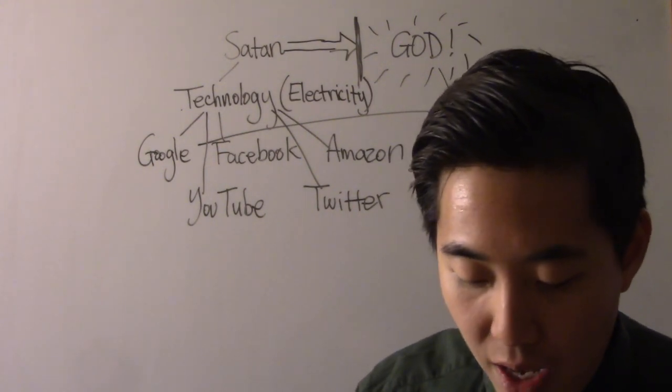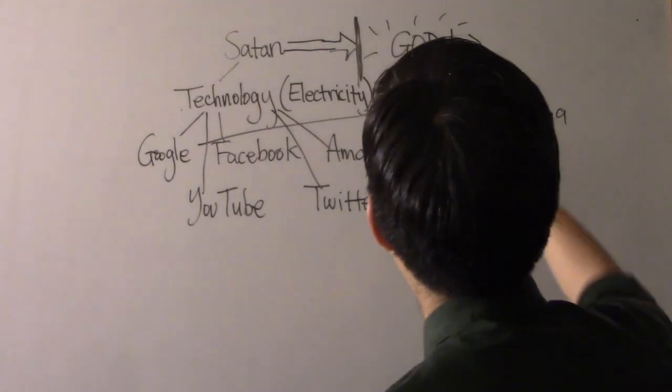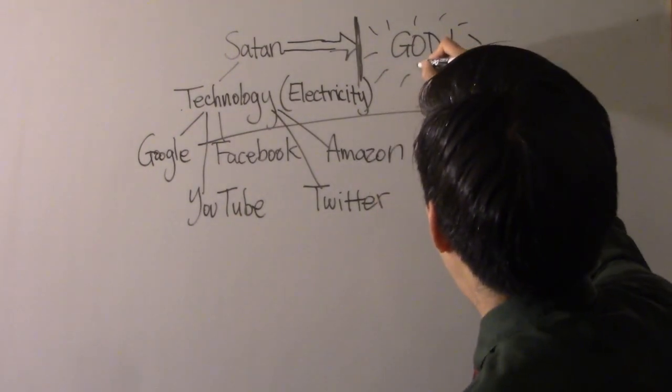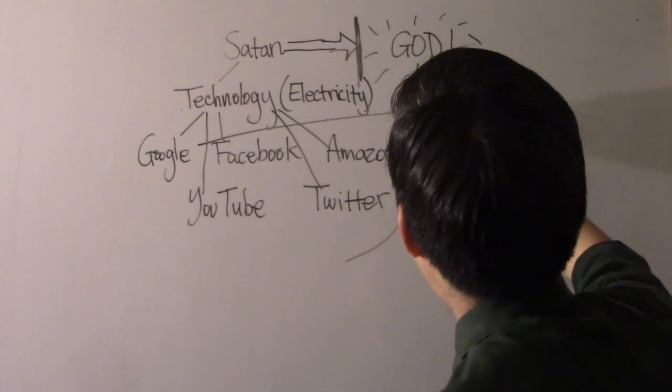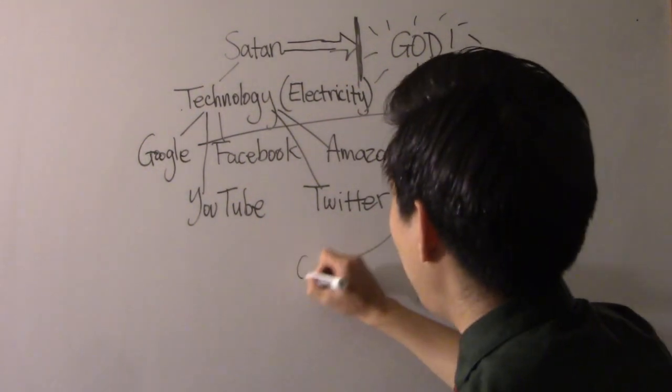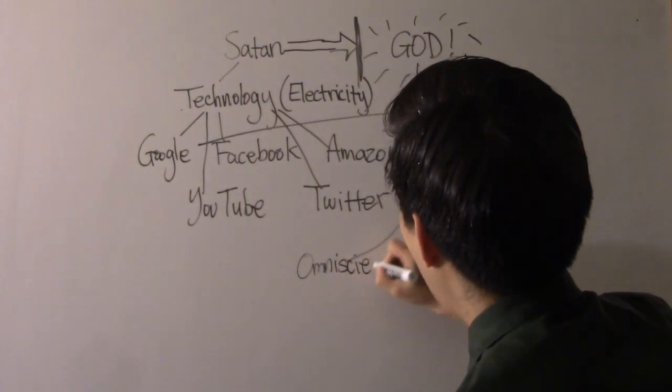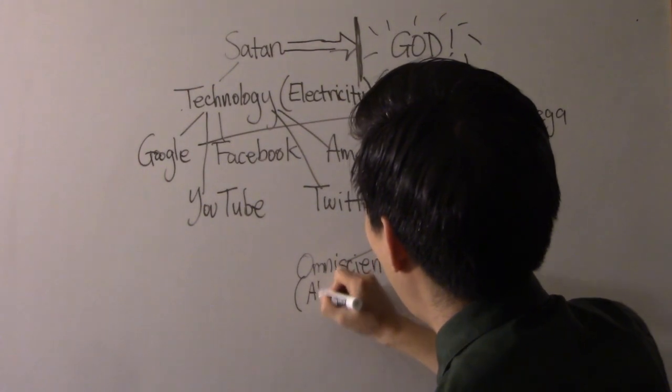Look at Genesis chapter 11. Genesis chapter 11. There are three main attributes of God that he is famously known for. Our God, what is he famously known for? In three cases. You ever heard this line before? He is omniscient. Why is he omniscient? Because it means he's all-knowing.